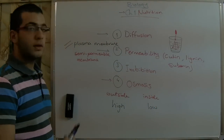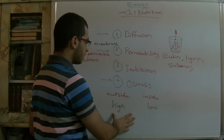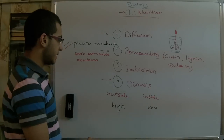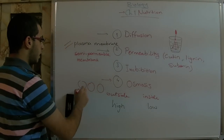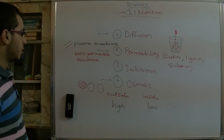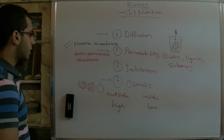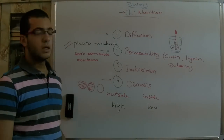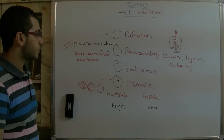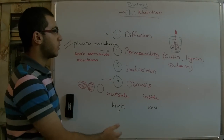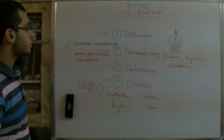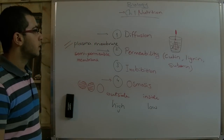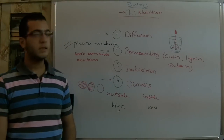Osmotic pressure is the means by which water moves from outside the plant to inside it. The osmotic pressure increases when the solution concentration inside the soil medium increases, because the water concentration decreases. Those were the four methods by which water and mineral salts transfer inside the plant. See you next time, thanks for watching.